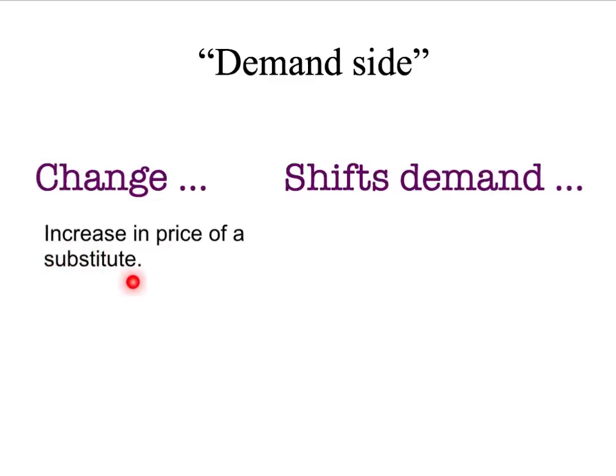For example, if wine and beer are substitutes and there is an increase in the price of wine, we would expect that to lead to a rightward shift — an increase in the quantity of beer that people would like to buy at any price for beer. So the increase in the price of wine will shift the demand for beer, where beer is a substitute for wine, to the right.